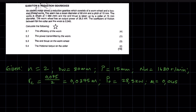Hello everyone, welcome. We are going to have a look at a problem on reduction gearboxes — worm and worm wheels — and see how you would approach problems based on worm and worm wheels. Looking at the statement, this is what we've been given. You can pause the video and go through the statement so you can see what it is that you've been given. I've already taken down the information provided in the statement.